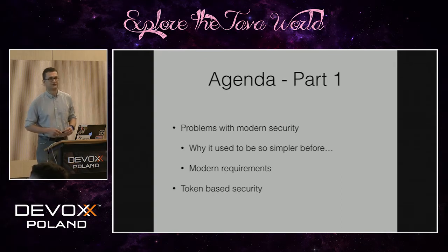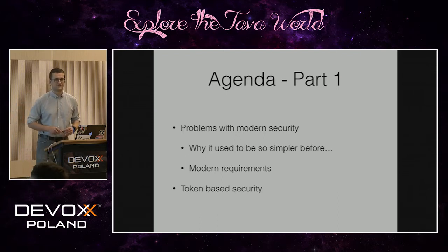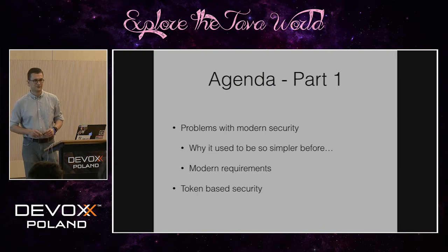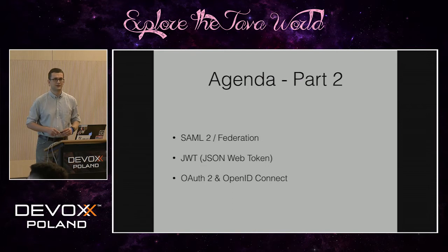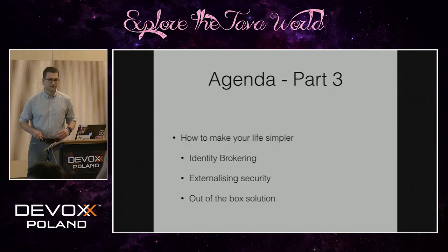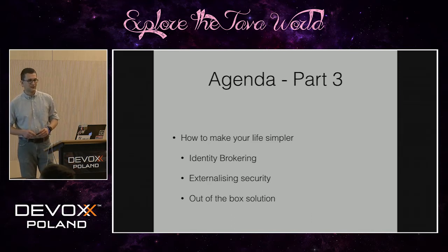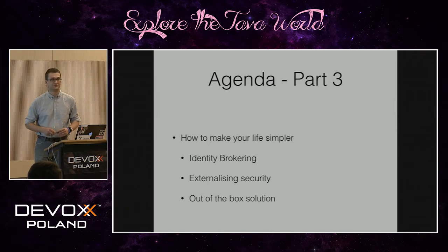What this presentation will be about: first I will describe the current concerns around security and the challenges we face, and I will introduce token-based security and why it's important. In the second part I will focus on four standards: SAML2, JWT (JSON Web Token), and OAuth2 and OpenID Connect, which are quite tied together. In the third part I will use Keycloak as an example to explain concepts of identity brokering and how you can externalize security from your application. At the very end I will also cover useful use cases with Kerberos.